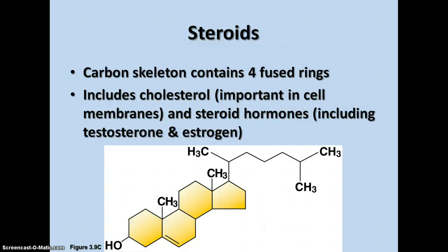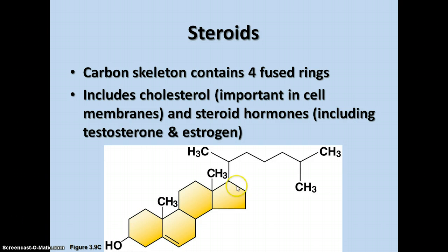Steroids are another category of lipids. They have a carbon skeleton containing four fused rings. This includes cholesterol and many other hormones called steroid hormones, including testosterone and estrogen. The steroid hormones are all based around the basic structure of cholesterol with a few added groups.